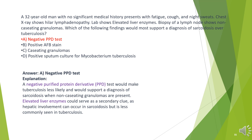The answer is A. Negative PPD test. A negative purified protein derivative (PPD) test would make tuberculosis less likely and would support a diagnosis of sarcoidosis when non-caseating granulomas are present. Elevated liver enzymes could serve as a secondary clue, as hepatic involvement can occur in sarcoidosis but is less commonly seen in tuberculosis.